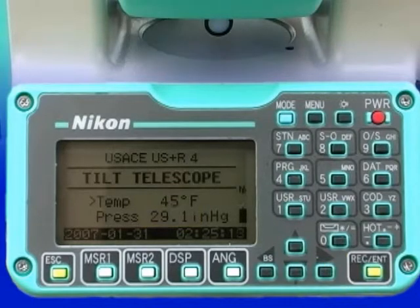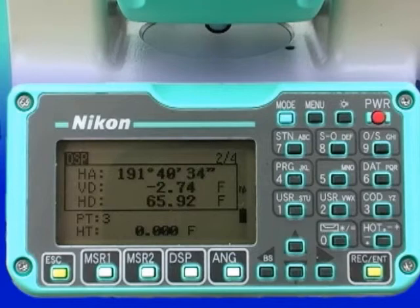Now, tilt the telescope up and down slightly. If the temperature and pressure are correct as initially displayed, you can skip these steps and just tilt the telescope to begin.